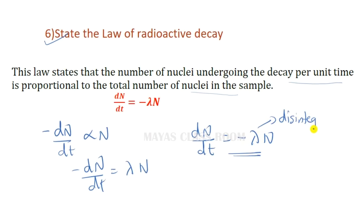The negative sign indicates that the number of radioactive nuclei decreases with time. This is the law of radioactive decay.